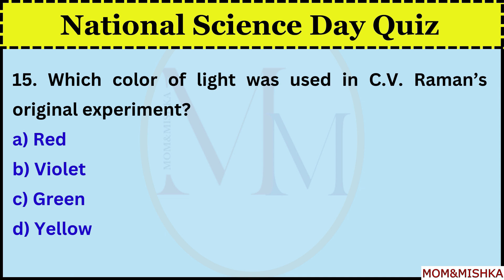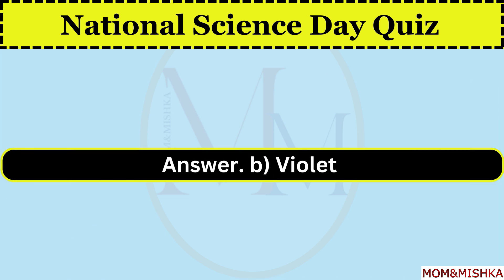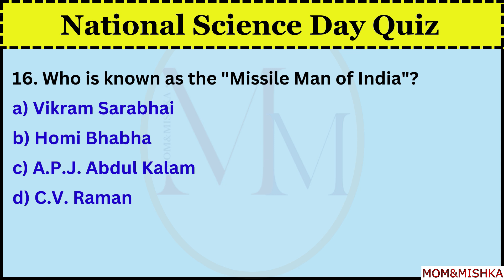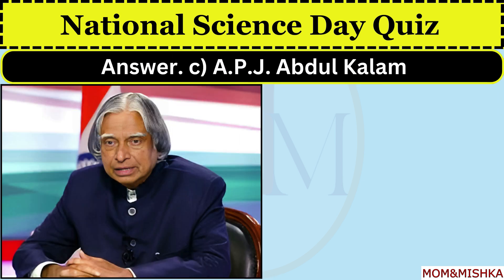Which color of light was used in C.V. Raman's original experiment? Violet. Who is known as the Missile Man of India? APJ Abdul Kalam.